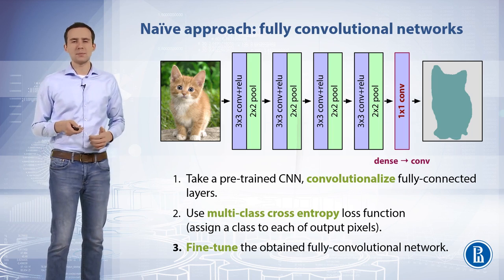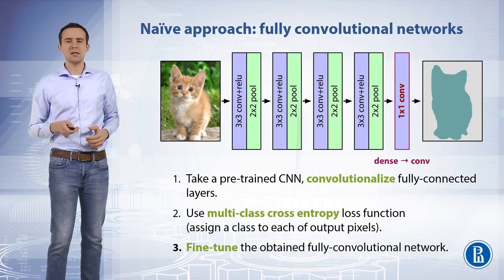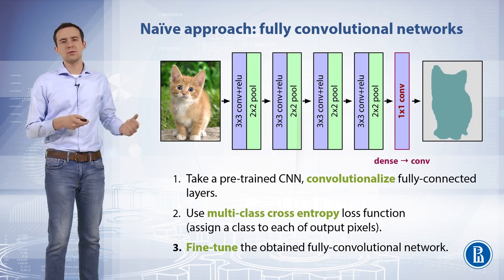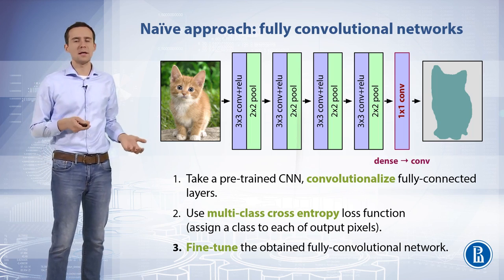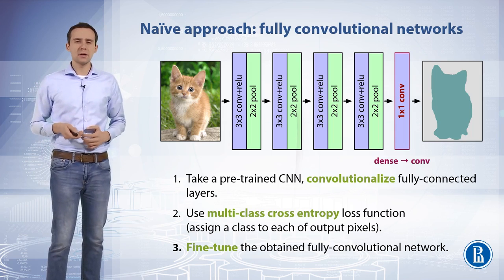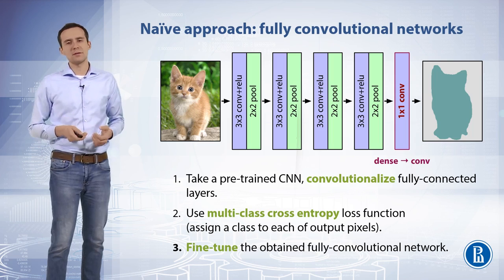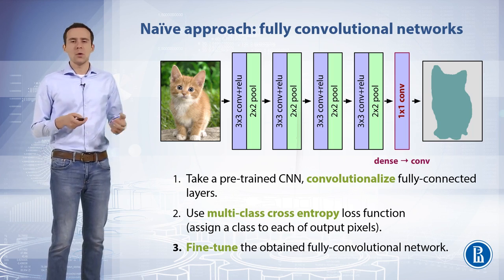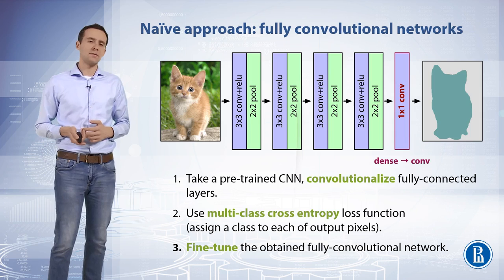First, we get a pre-trained convolutional neural network, such as one pre-trained for classification on ImageNet. You can choose your own favorite models like AlexNet, VGG, or ResNet. We then convert the last fully connected layer into a convolutional layer of receptive field one-by-one. When we do this, we gain some form of localization by looking at where we have more activation.